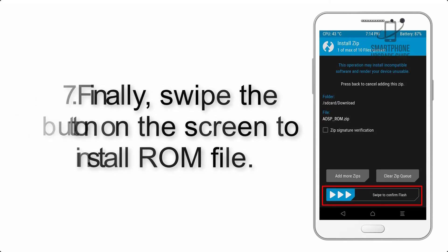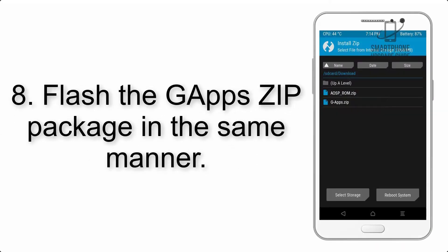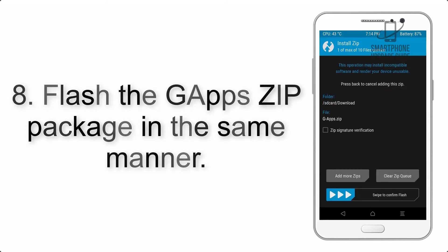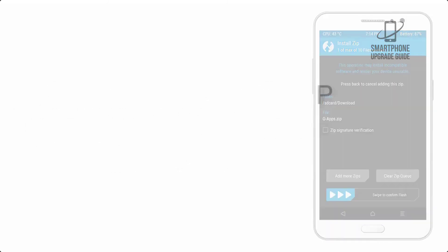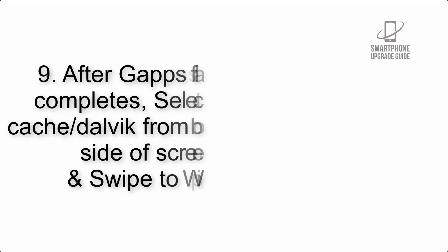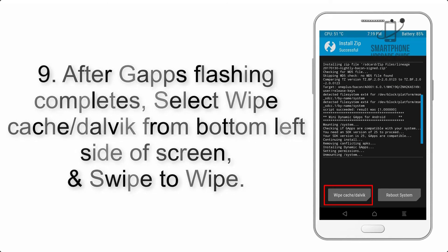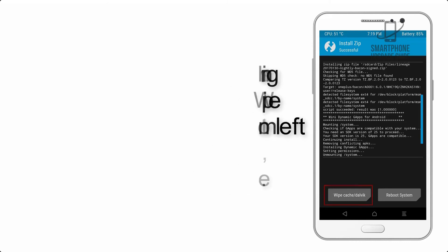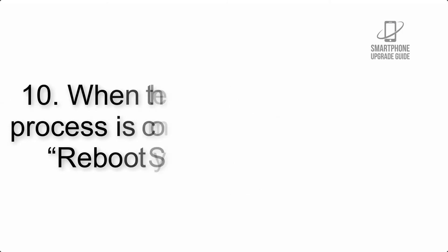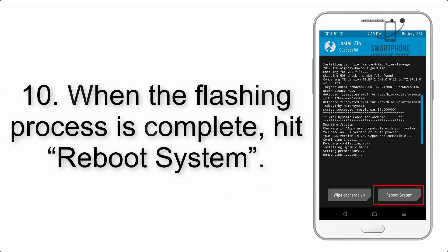Step 7: Swipe the button on the screen to install the ROM file. Step 8: Flash the GApps zip package in the same manner. Step 9: After GApps flashing completes, select Wipe Cache and Dalvik from the bottom left side of the screen and swipe to wipe.